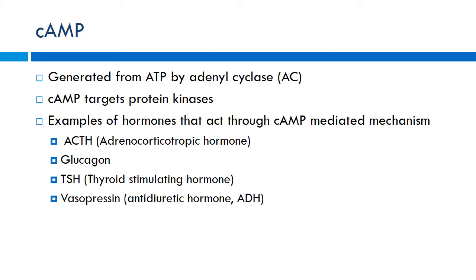Cyclic AMP is generated from ATP through the adenylyl cyclase enzyme. Cyclic AMP is really important for targeting protein kinases, which cause lots of downstream processes. Good examples of things working through cyclic AMP include ACTH, which is important for stress response; glucagon, which causes glycogenolysis and gluconeogenesis to raise blood sugar; thyroid stimulating hormone; and vasopressin (antidiuretic hormone). All these work through cyclic AMP to cause their downstream physiologic effects.